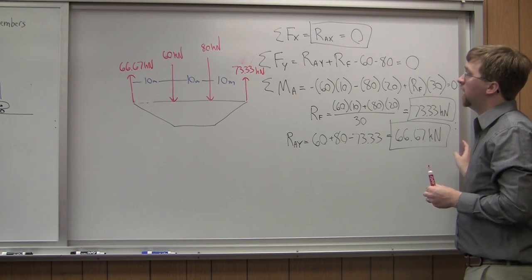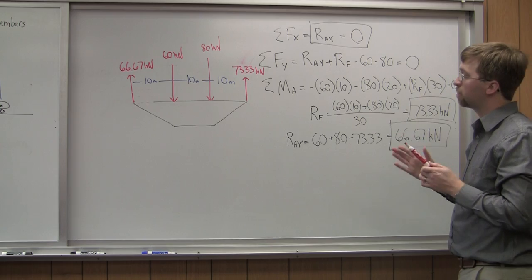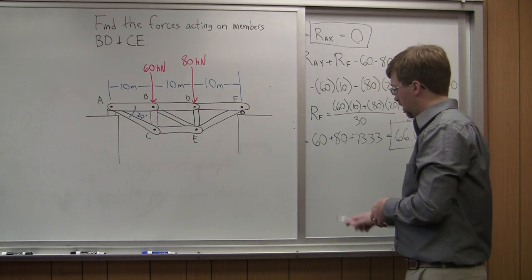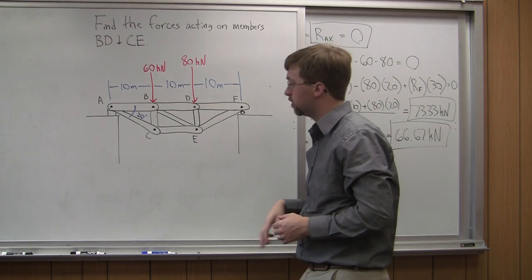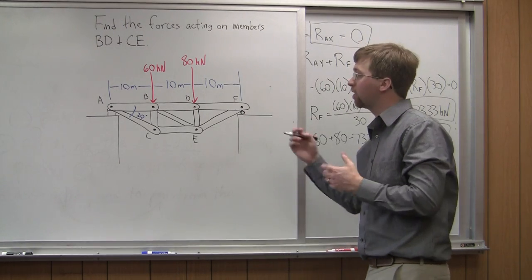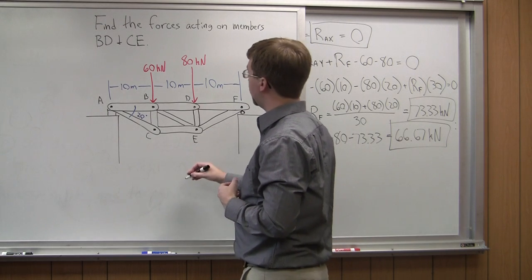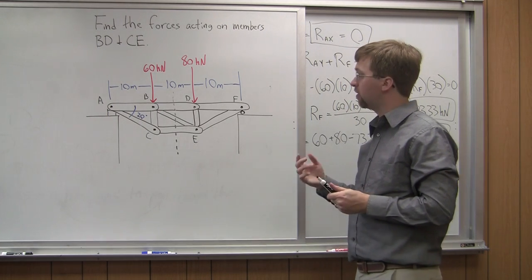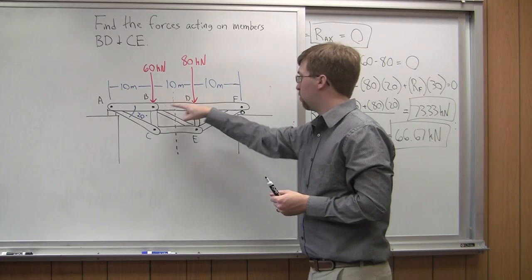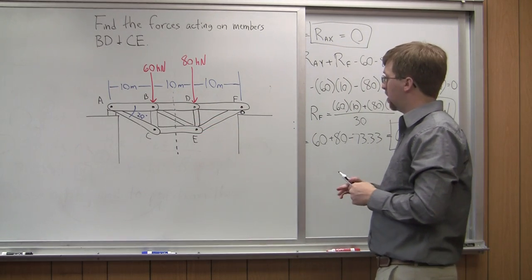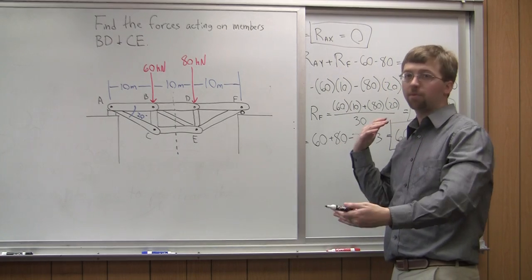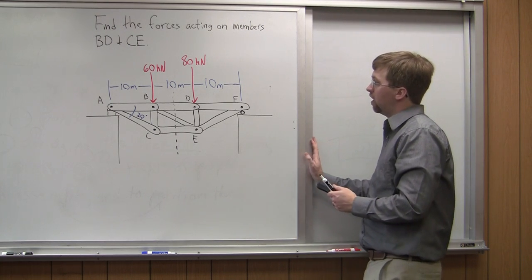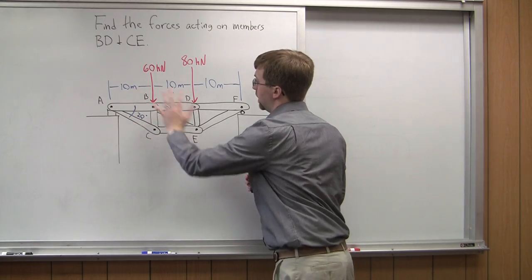Now we move on to the method of sections. We want to find BD and CE, so we cut through those members by slicing straight down the middle. I check that I'm cutting no more than three members for a 2D problem — and I've got one, two, three members cut. I can solve this with one set of equations. Let's draw the free body diagram of the left half.